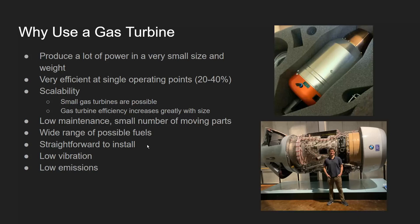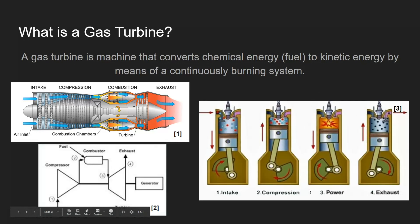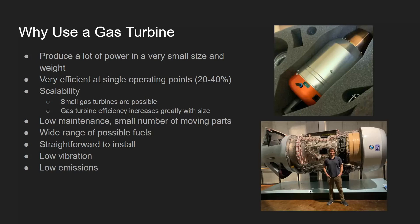The continuously burning system of a gas turbine is also capable of producing very low emissions. Because all the flow phenomena in the combustor are stable and occurring continuously, we can be very careful with how we control and modify them to produce the lowest possible emissions. On an internal combustion engine, the power stroke must occur very rapidly, making it difficult to achieve complete combustion — resulting in nasty emission products such as sulfur oxides, carbon monoxide, and soot. The gas turbine avoids these with its continuously burning, very efficient combustion system.